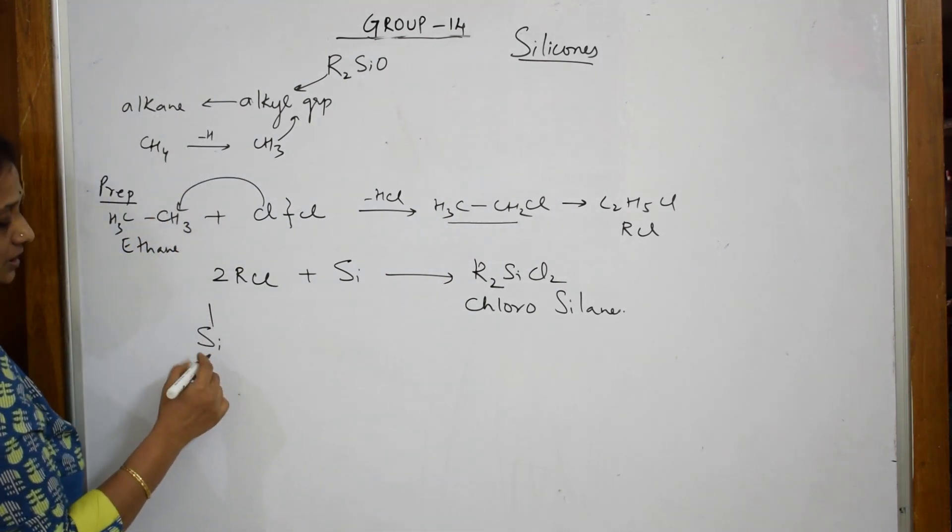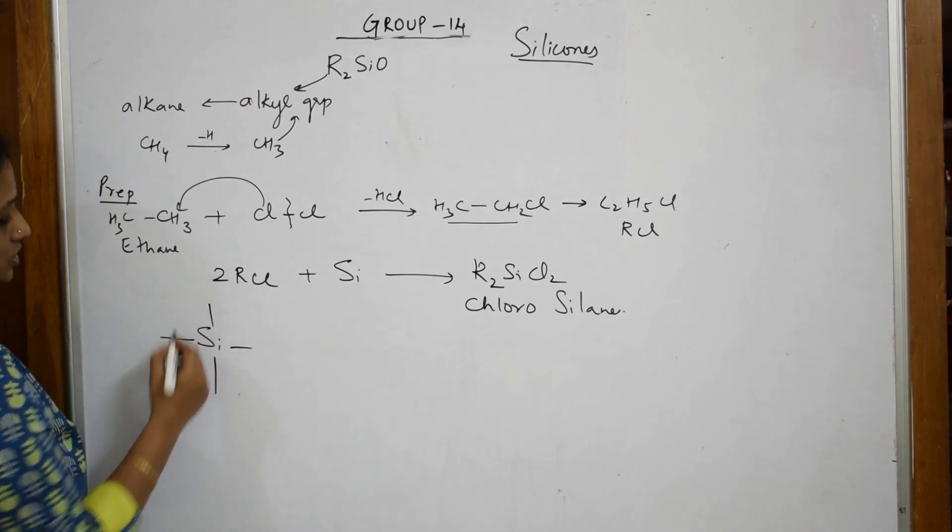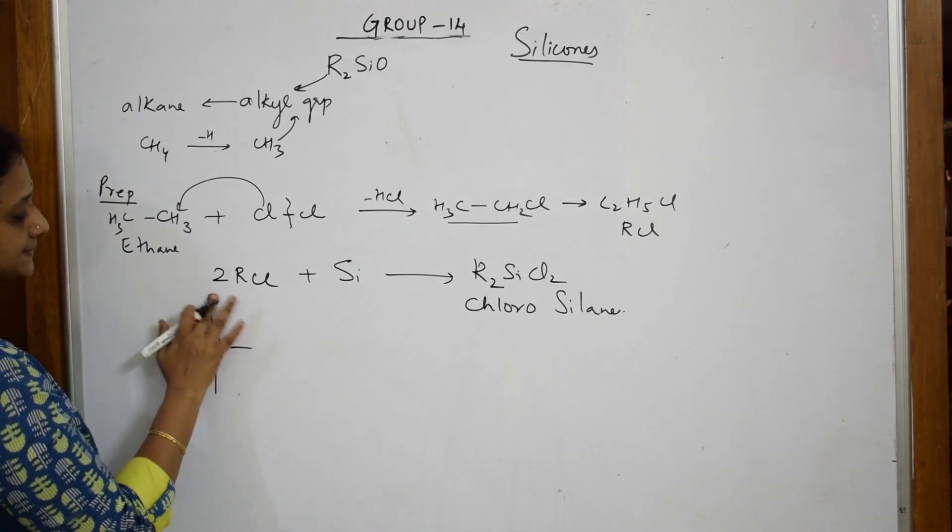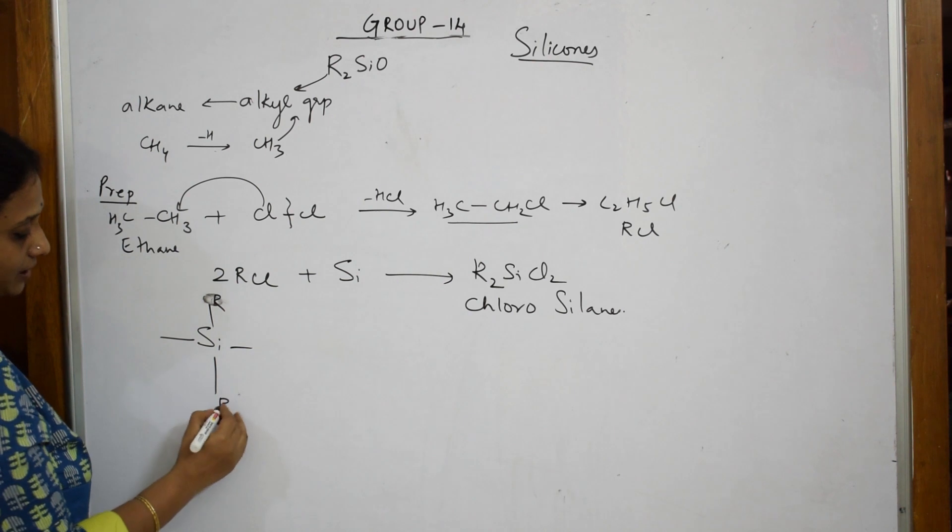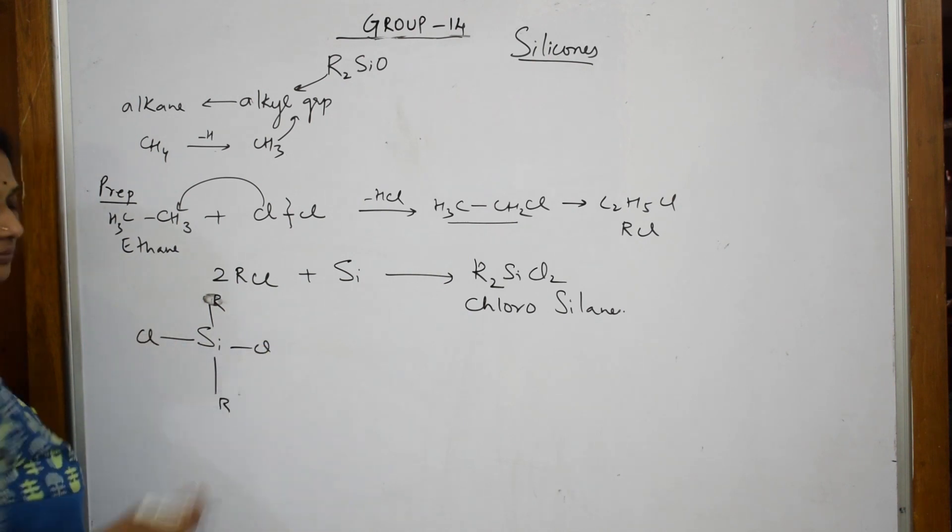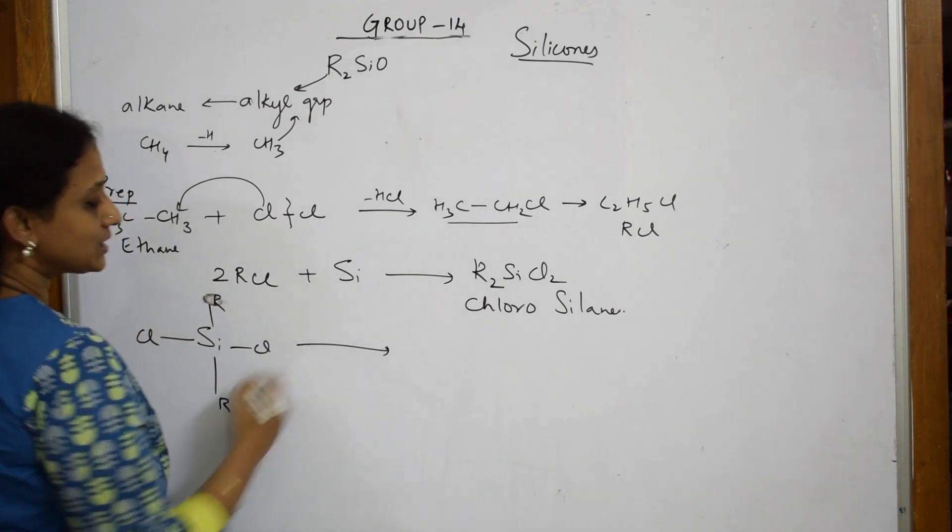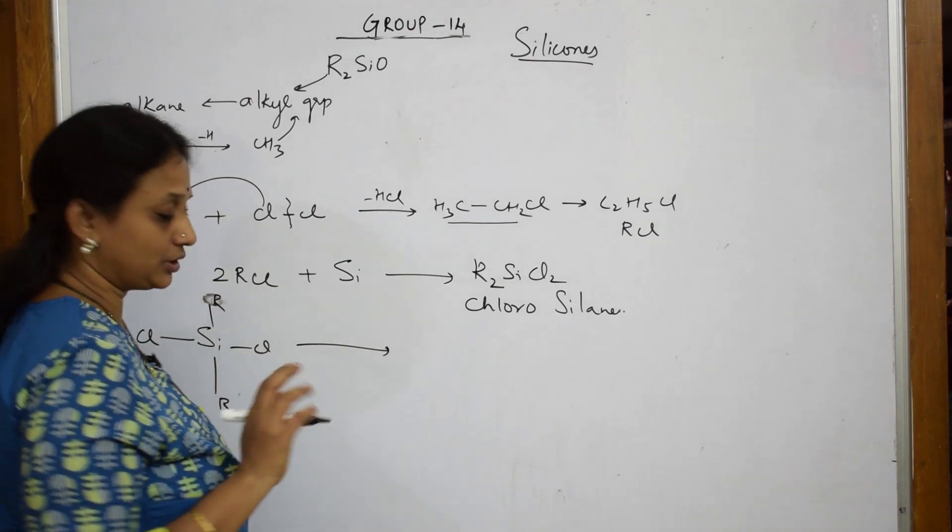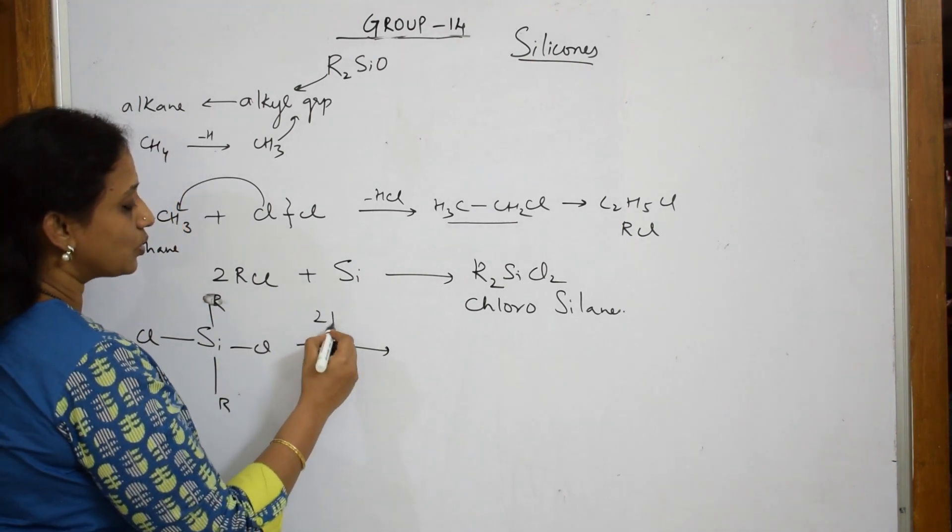So, for convenience, I am just writing this planar structure. So, you have two R groups and two Cl groups. Now, to this particular thing, I am going to add water molecule. How many water molecules? Two water molecules.